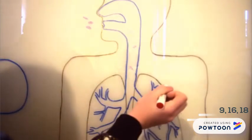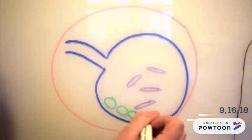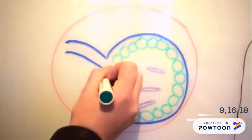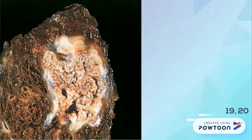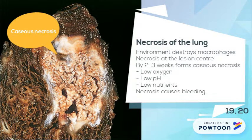The next step is the formation of granulomas against M. tuberculosis, which consists of nodular-type lesions forming an accumulation of activated T lymphocytes and macrophages, creating a microenvironment that limits replication of the mycobacteria. This environment destroys macrophages and causes necrosis at the lesion centre. By 2–3 weeks, the necrotic environment is referred to as caseous necrosis, characterised by low oxygen levels, low pH, and limited nutrients. Necrosis can cause bleeding by expanding blood supply and by bronchial mucosal invasion, which is why coughing up blood is a symptom.